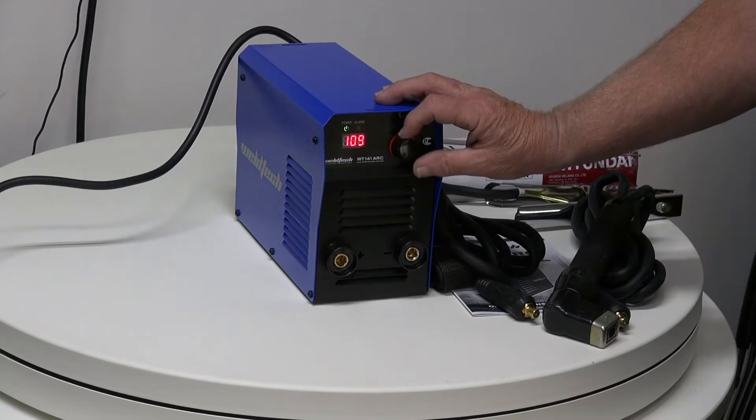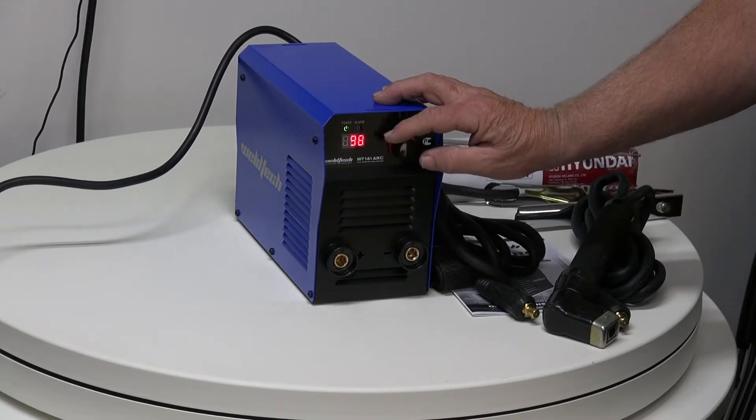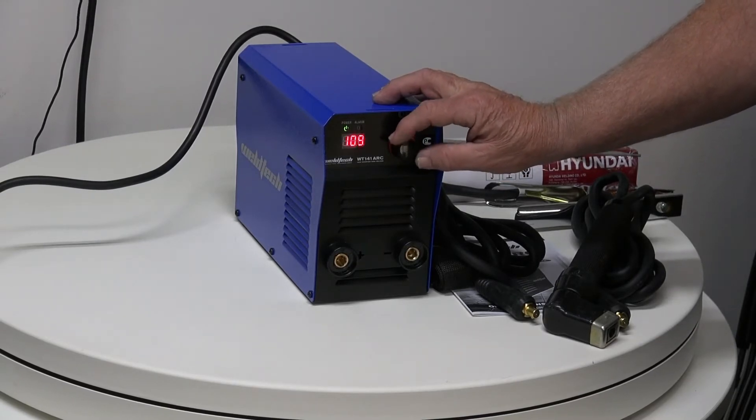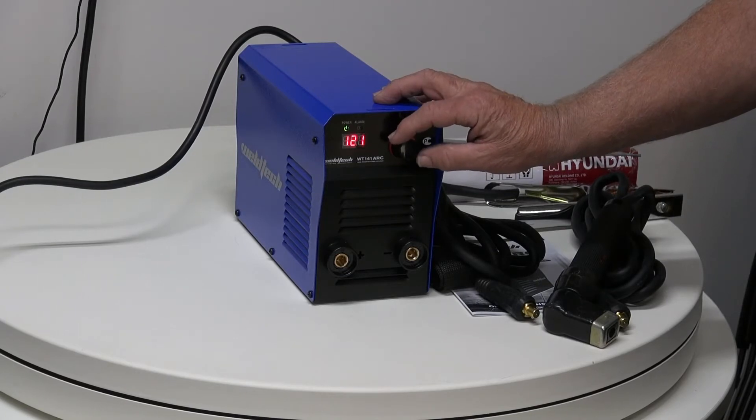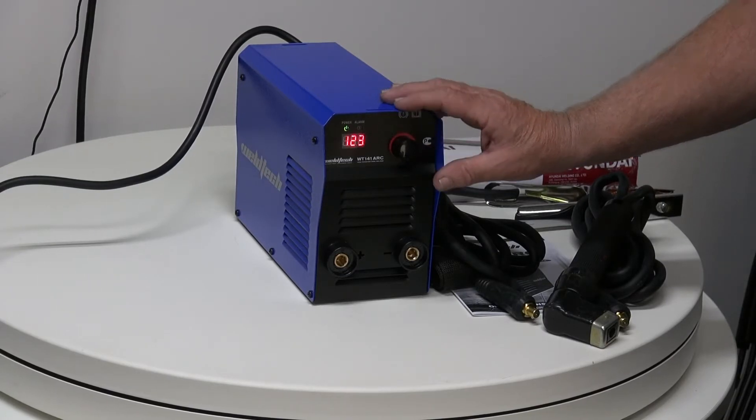We have the knob on the front which adjusts the amperage. The higher the amperage, the thicker the plate that we can weld with and the bigger the rod. If we have it set down around 90 amps we can run a 2.5. If we have it up around about 125 or 130 amps depending on the electrode we can run a 3.2mm rod off this one.